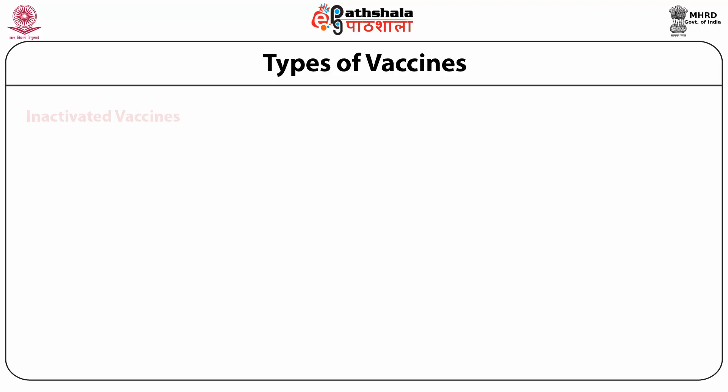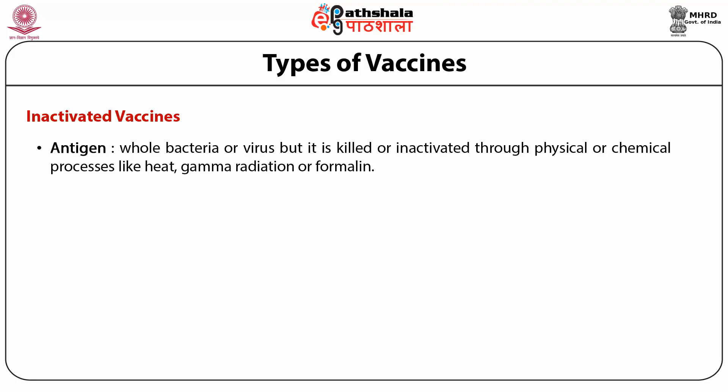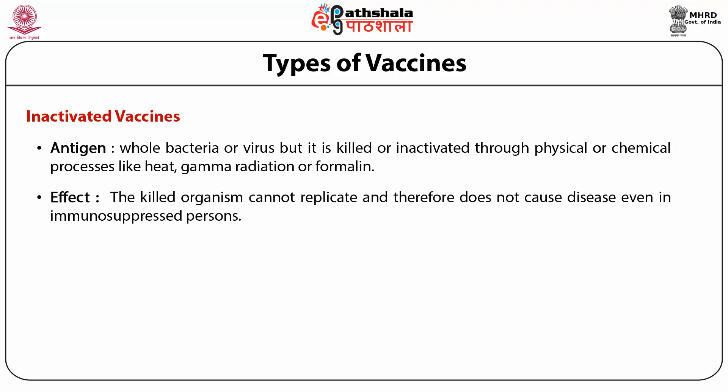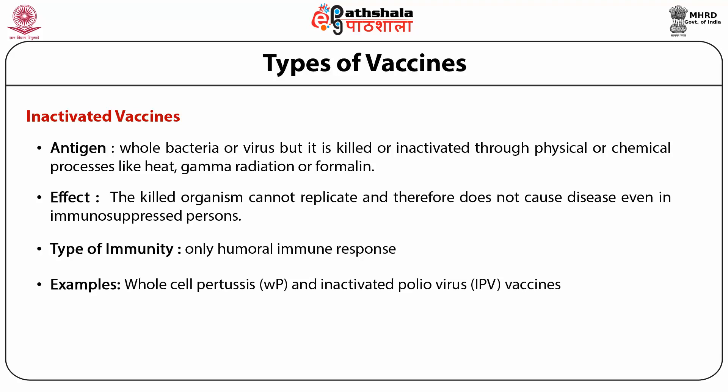The next category is inactivated vaccines. The antigen in these vaccines is the whole bacterium or virus, but it is killed or inactivated through physical or chemical processes such as heat, gamma radiation, or formalin treatment. These killed microorganisms cannot replicate and do not cause any disease, even in immunosuppressed persons. The immunity generated is only humoral — no cell-mediated response. Whole-cell pertussis and inactivated polio virus vaccines belong to this category.